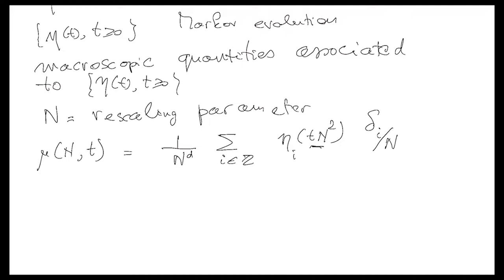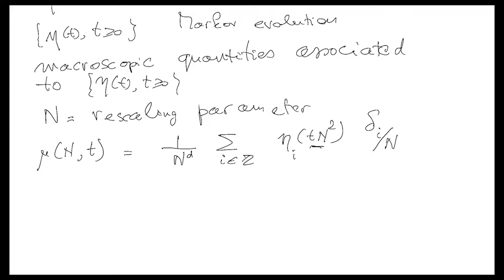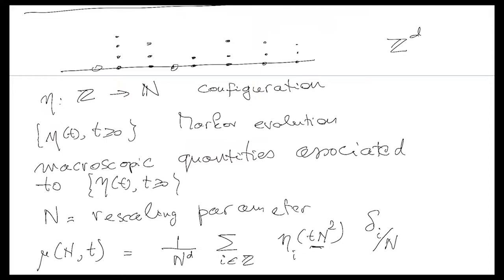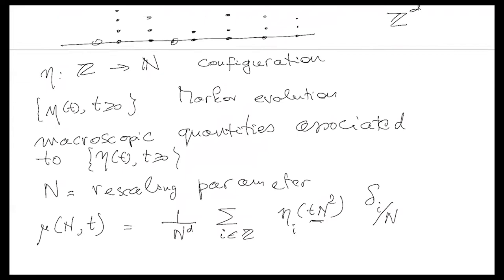A question: what does d stand for? d is the dimension — we are on Z^d. In the picture, d was one, so that just corresponds to one over n. It corresponds to this one over n in the law of large numbers: if you have a field of identically distributed things, you divide by one over n to the d. So if I integrate a function phi of x against this distribution, it's actually one over n to the d, summed over i in Z^d, of the function evaluated at i over n, multiplied by eta i at time n² t. You can think of this as a field — you put in a test function and you get out a number.